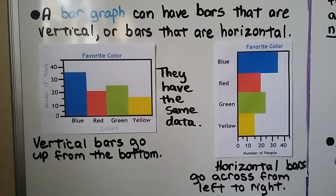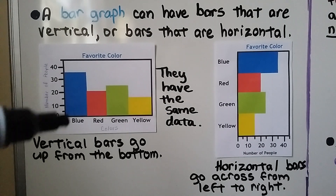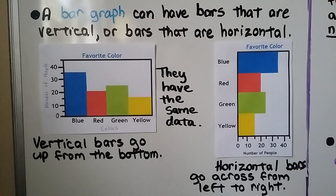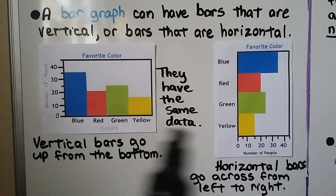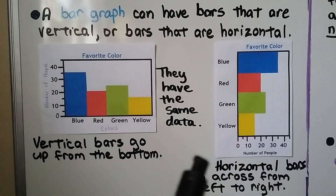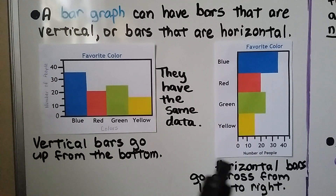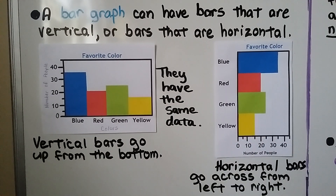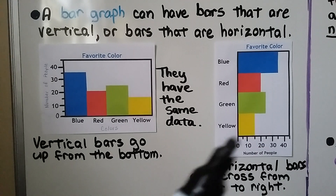These bars are vertical — they go from the bottom up. These bars are horizontal and they go across from left to right. They start on the left and go towards the right as the numbers get bigger. Both graphs show the same data.